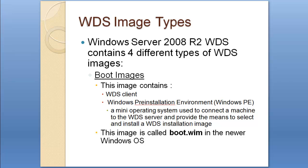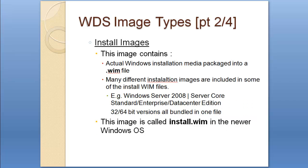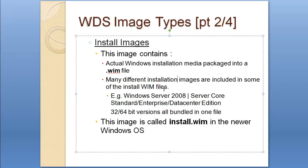You'll see all of this in a few minutes when I show you how to deploy Windows 7. The second type of image is the install image. This image contains actual Windows installation media packaged into a .wim file. Some of these .wim files contain many different installation images — for example, Windows Server 2008 includes the Standard, Enterprise, and Datacenter editions, along with 32-bit and 64-bit versions of each, and also Server Core editions. This image is called install.wim in newer operating systems.